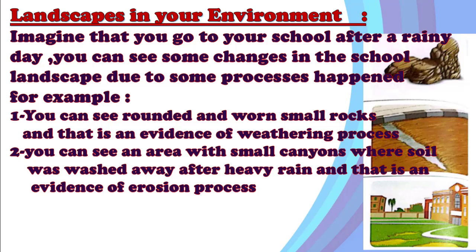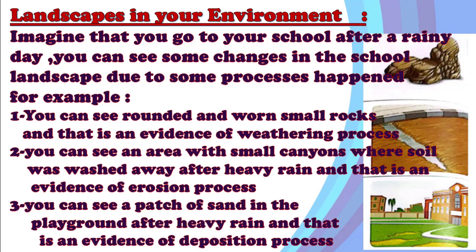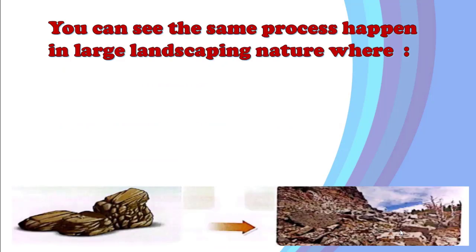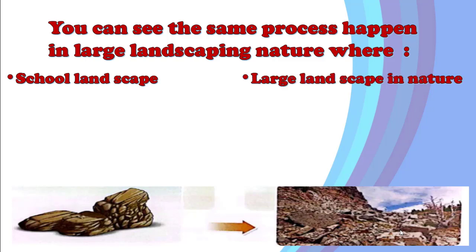You can see V-shaped canyons where soil was transported by the direction of rain, as evidence of erosion. You can also see a patch of sand on the playground after heavy rain, which is evidence of deposition. On the playground, you can see a group of land formed due to deposition. These same processes happen in large landscapes in nature, just as they do in school landscapes.